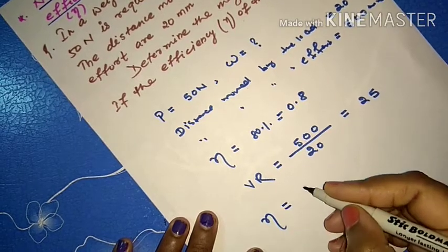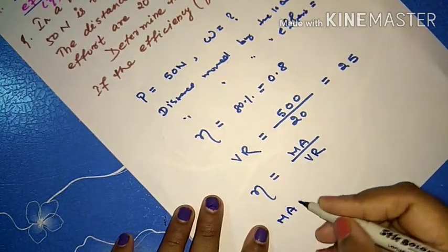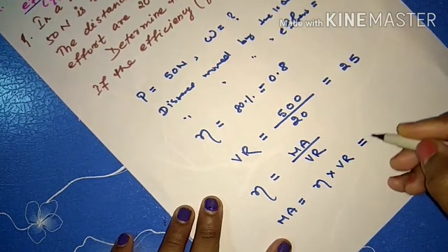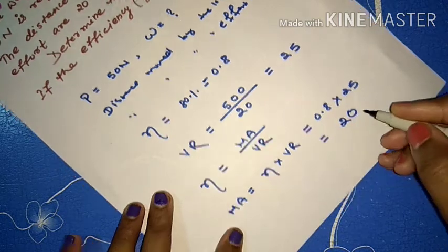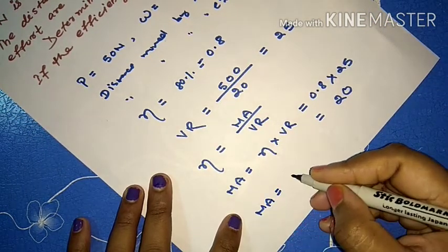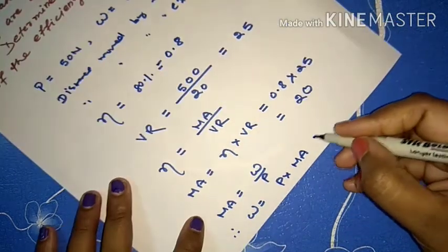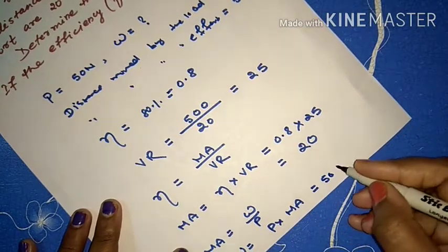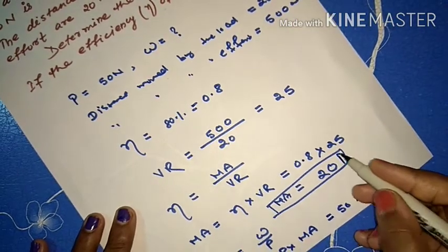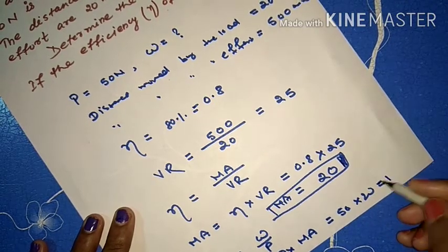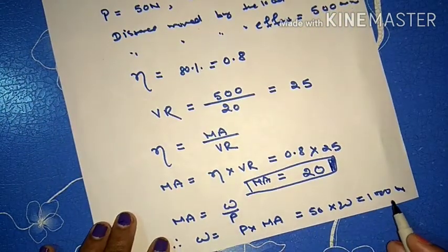Efficiency of a machine equals mechanical advantage divided by velocity ratio, as derived earlier. So mechanical advantage equals efficiency × velocity ratio = 0.8 × 25 = 20. Now, mechanical advantage equals W divided by P, so W equals P × mechanical advantage = 50 × 20 = 1000 N. Therefore, the magnitude of the load W is 1000 N.